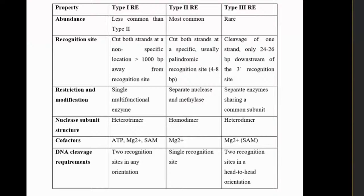Type 1 restriction enzyme is a single multifunctional enzyme with heterodimers — it has two domains. The cofactors are very important. In exam questions, if they mention ATP as a cofactor, that is the keyword. Non-specific location, single multifunctional enzyme, and ATP are the three keywords identifying Type 1 restriction enzyme.